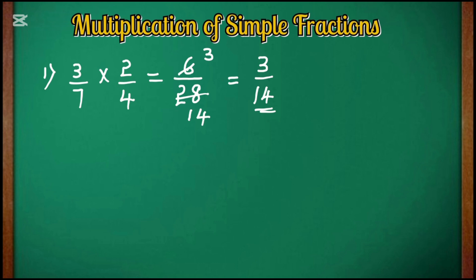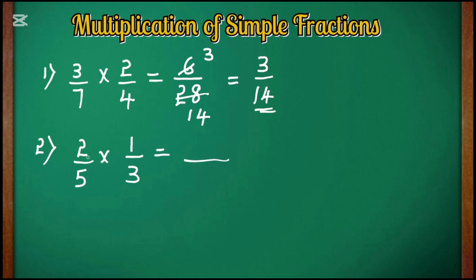For question number 2, I am taking the fractions 2/5 × 1/3. By multiplying the numerators, 2 × 1, we get 2 in the numerator. By multiplying the denominators, 5 × 3, we get 15 in the denominator. So our answer is 2/15. This is our final answer because it cannot be simplified any further.